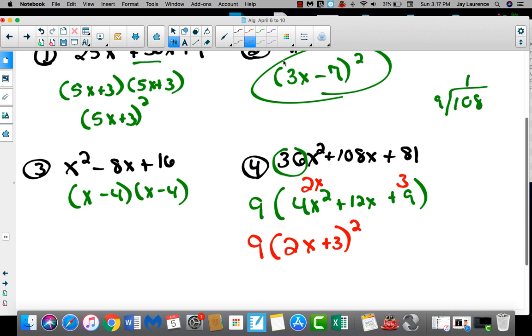There you go. Hey, by the way, if I wanted to figure out what this equals, the 9 times the quantity of 2x plus 3 squared, like that, should I do 9 times 2? No, of course not. I should do the order of operations first.